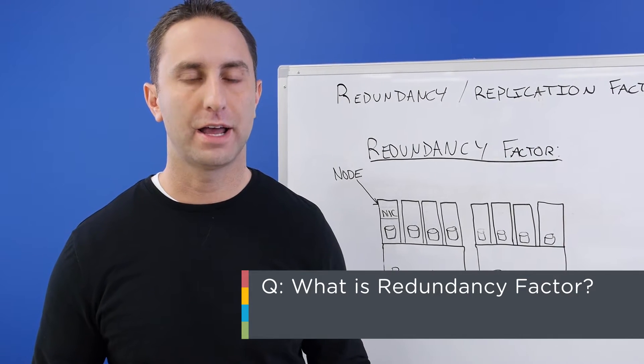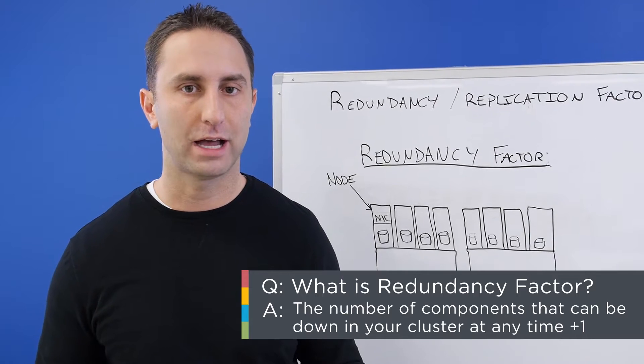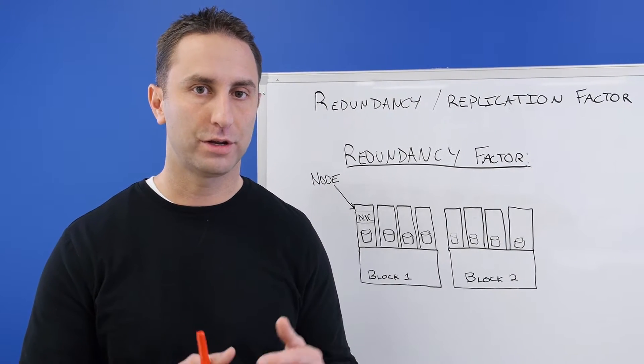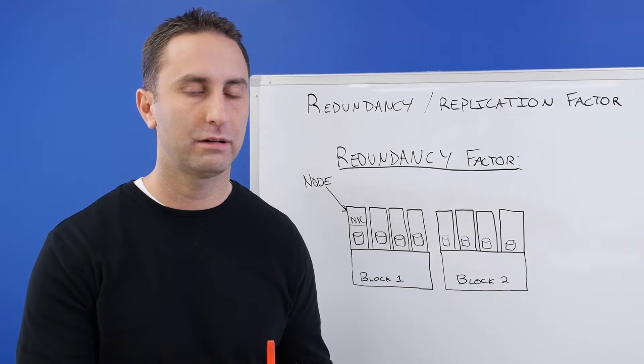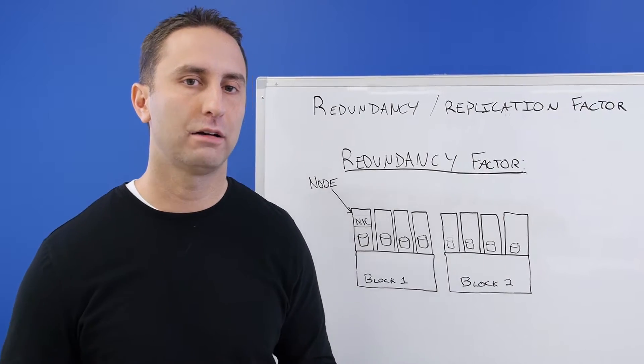So what is redundancy factor? We define redundancy factor as the number of components that can be down in your Nutanix cluster at any one time plus one. So if you want to set a redundancy factor of two, you can tolerate any one component being down. And if you want to set a redundancy factor of three, you can tolerate any two components being down.